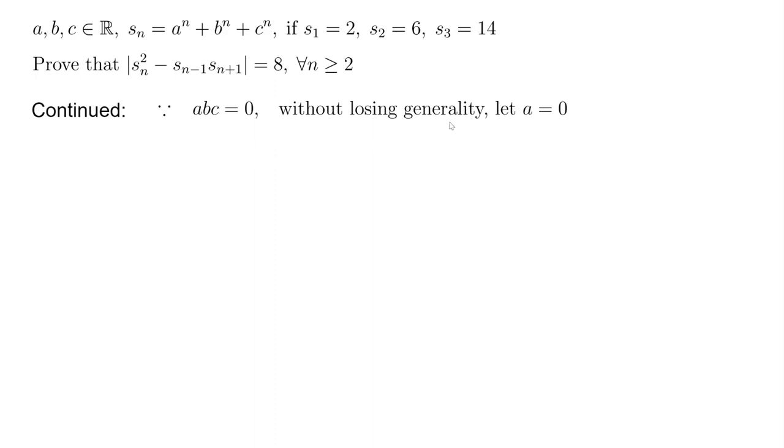You get b + c equals 2, b^2 + c^2 equals 6. And so we can easily get bc, which is (b + c)^2 minus b^2 minus c^2 divided by 2, which is minus 1 here. Now we know b + c is 2, b times c is minus 1, and we can use the Vieta theorem.